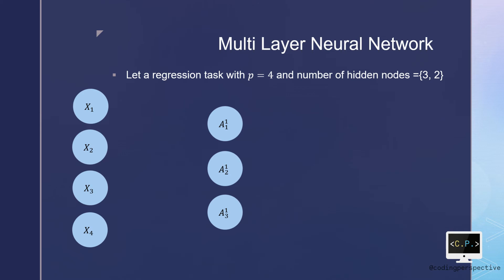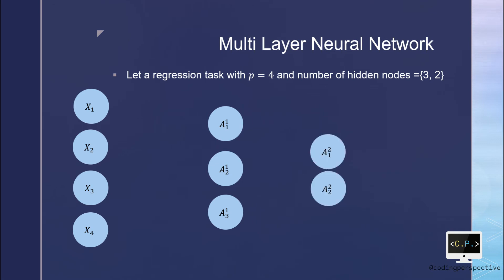Then the second layer comes with two hidden nodes. Likewise, they are called A1,2 and A2,2.